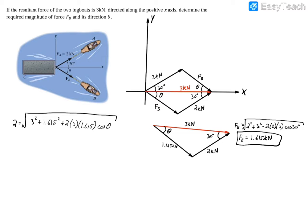So now we just need to isolate for theta, so if you square both sides you're going to have that 4 equals 3 squared plus 1.615 squared plus 2 times 3 times 1.615 times the cosine of theta.